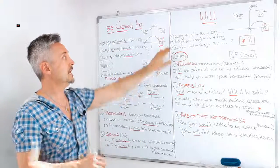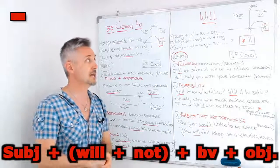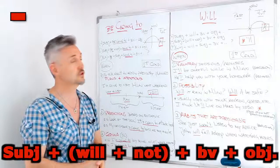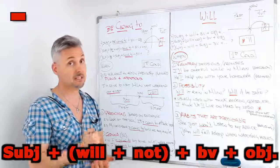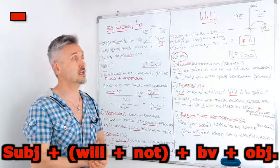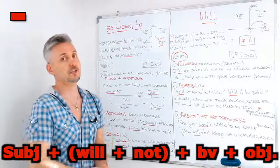Then for a negative sentence, we need the subject plus will plus not, so it would be won't, plus the base of the verb, plus the object, and then the time expression, if any.